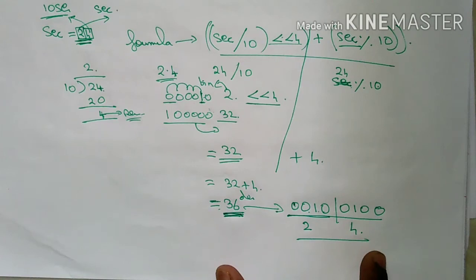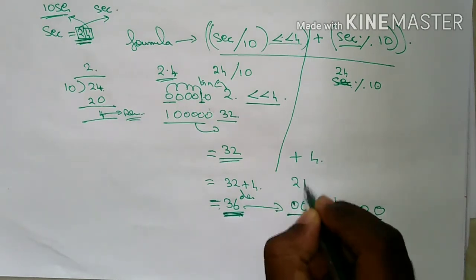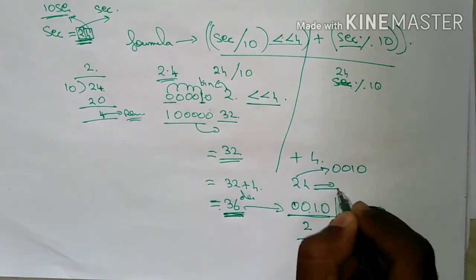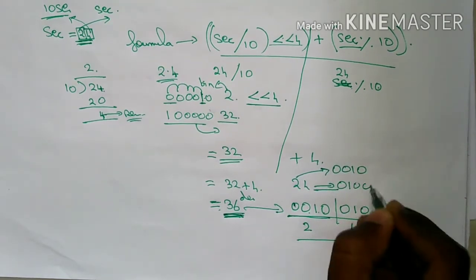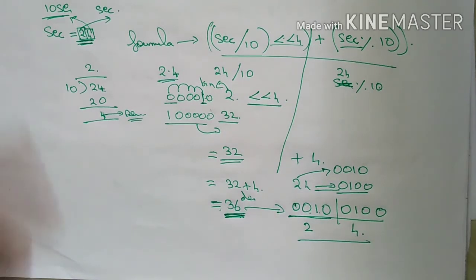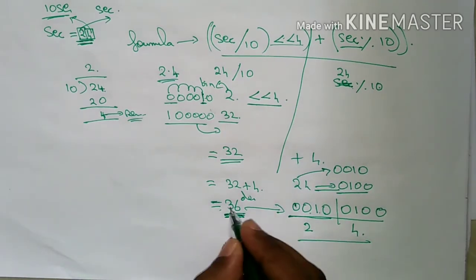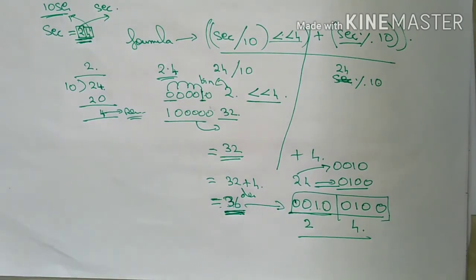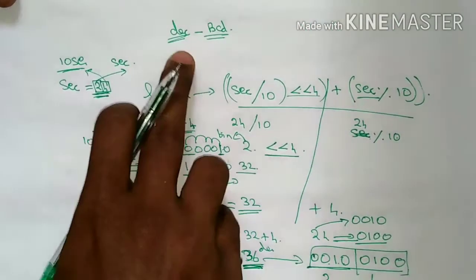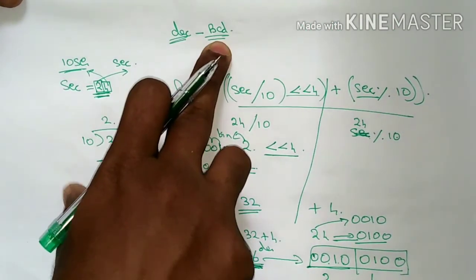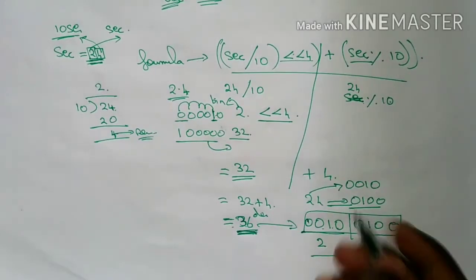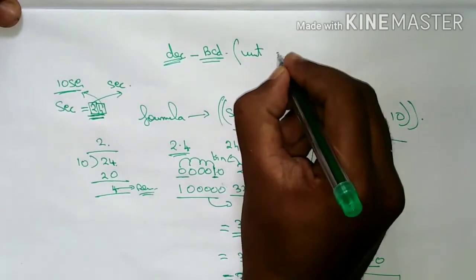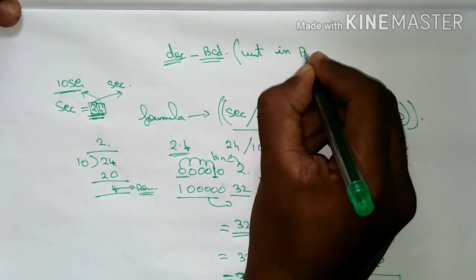Binary — we are now doing decimals to BCD. So 24 is here. This binary is 0010 and this decimal is 0100. That's how we call it — we call it the register. Now we have to store it in the register. This value is only for write — write in RTC.